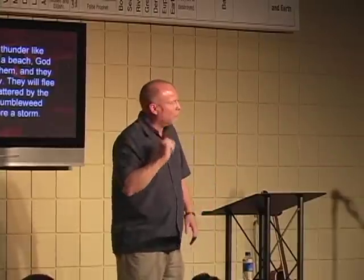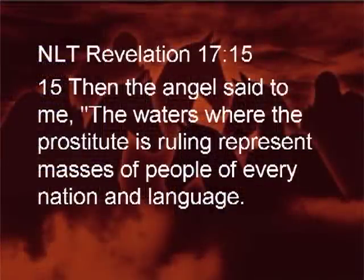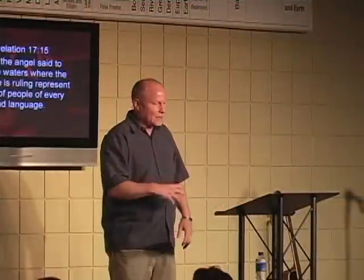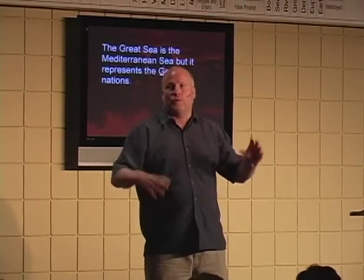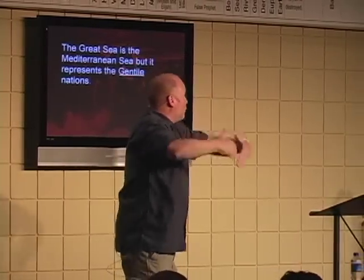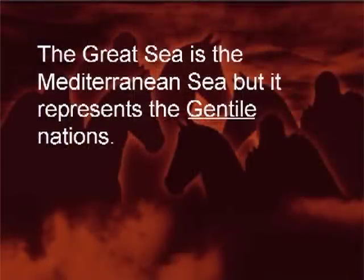A New Testament example: Revelation 17:15 says, 'The waters where the prostitute is ruling represents masses of people of every nation and language' — that's the Gentile nations. Whenever the Jew heard mention of the great sea, it referred to the Mediterranean Sea but also represented the Gentile nations, because those armies would come up on the coastline like big waves. So in this vision, the four winds of heaven — meaning God has something to do with this — is stirring up the Gentile nations just like the wind stirs up the great sea.